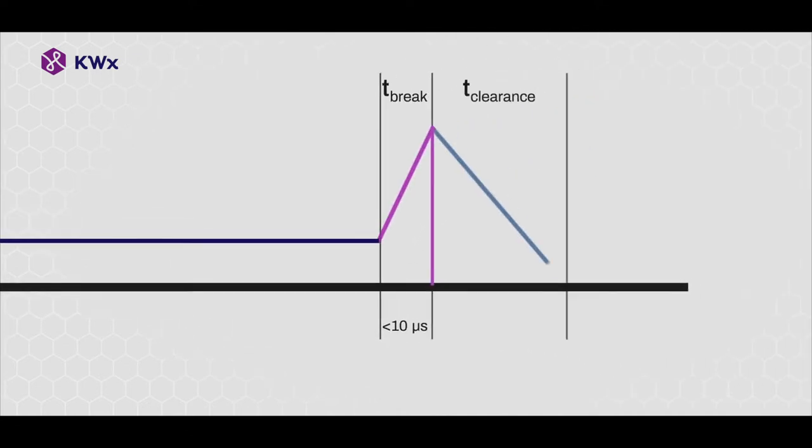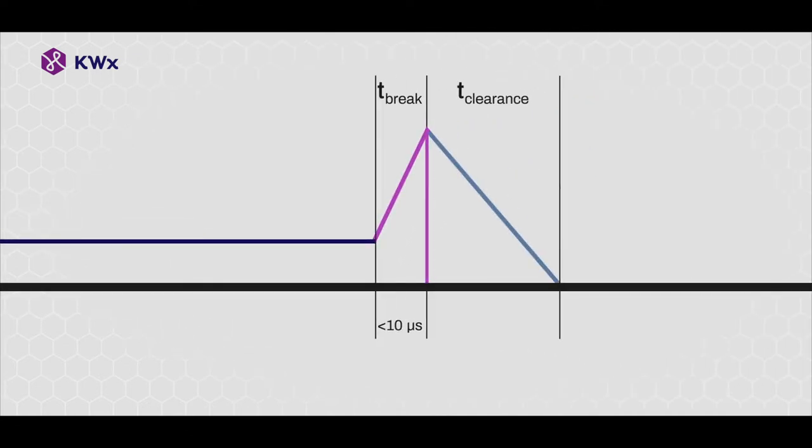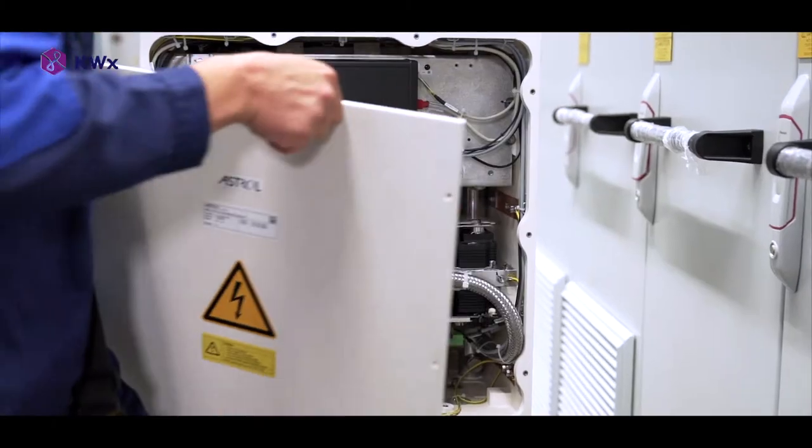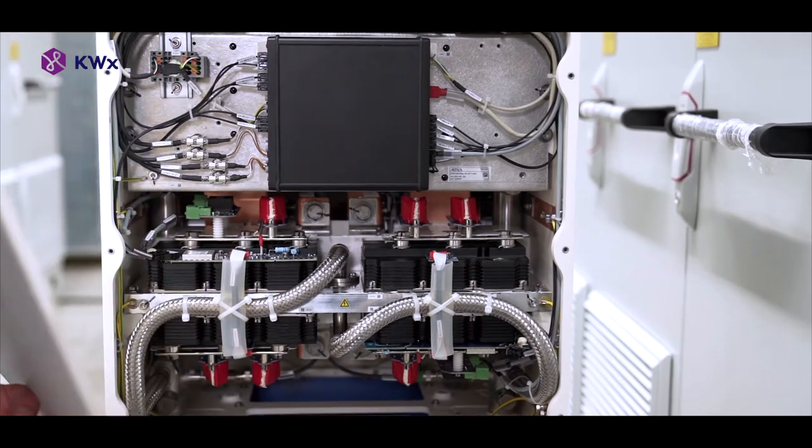It interrupts the entire short-circuit current in microseconds. The Austral DC breaker switch is an independent building block that enables easy integration into new and existing DC systems.